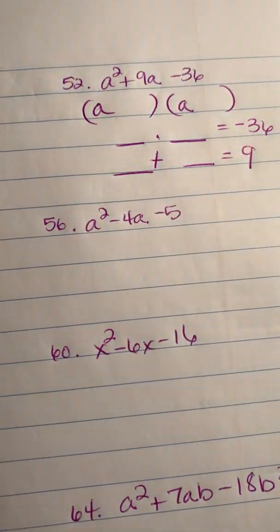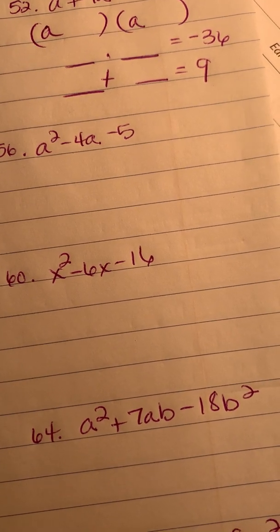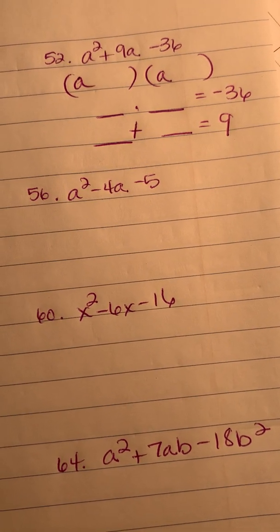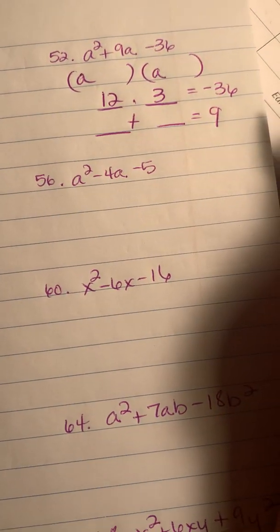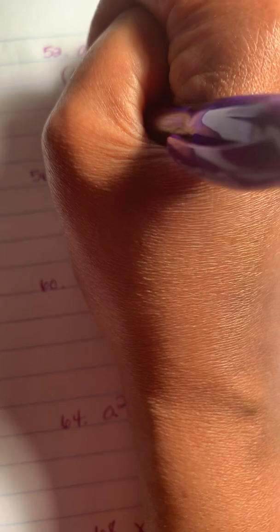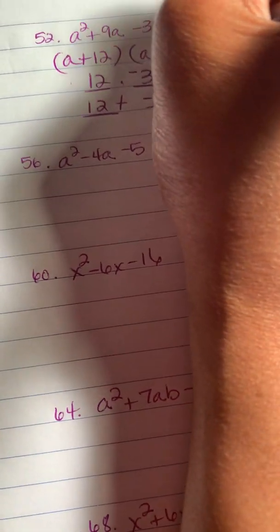Next: a here and a here. Two numbers that when I multiply them together I get negative 36, and when I add them together I get nine. I'm thinking four times nine — that won't give me a nine though. What about 12 times three? Positive 12 times negative three gives negative 36, and 12 plus negative three gives positive nine. So that's positive 12 and negative three.